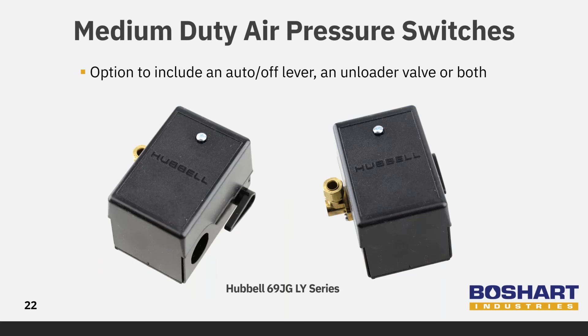These Hubble medium duty air pressure switches have the option to include an auto-off lever, an unloader valve, or both. The unloader valves are designed to unload the pump and airline pressure after motor shutdown.